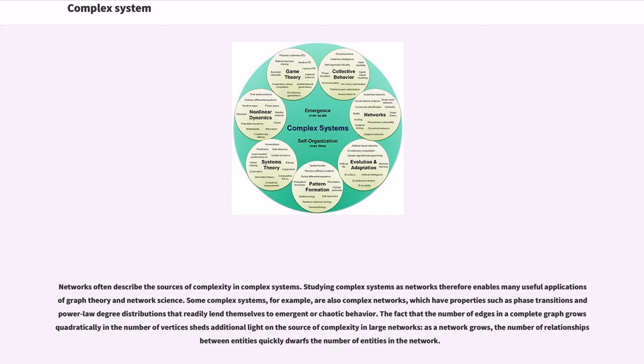Networks often describe the sources of complexity in complex systems. Studying complex systems as networks therefore enables many useful applications of graph theory in network science. Some complex systems, for example, are also complex networks, which have properties such as phase transitions and power law degree distributions that readily lend themselves to emergent or chaotic behavior. The fact that the number of edges in a complete graph grows quadratically and the number of vertices sheds additional light on the source of complexity in large networks. As a network grows, the number of relationships between entities quickly dwarfs the number of entities in the network.